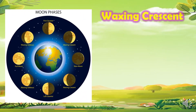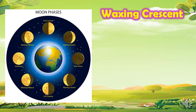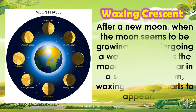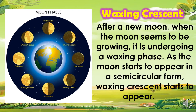Another phase of the moon is the waxing crescent. After a new moon, when the moon seems to be growing, it is undergoing a waxing phase. As the moon starts to appear in a semicircular form, the waxing crescent starts to appear.